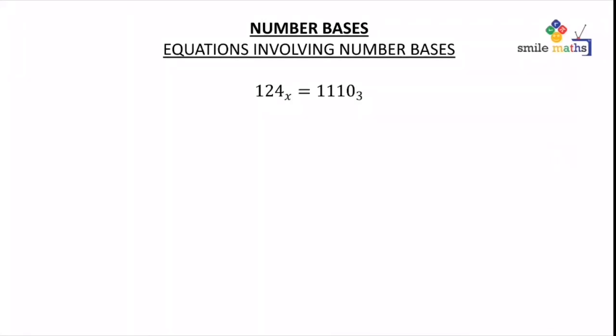We have another example here: 124 base x equals 1110 base 3. Both sides are not in base 10, so we change both sides by labeling 0, 1, 2, and this on the right side is going to be 0, 1, 2, 3 because it has 4 digits.